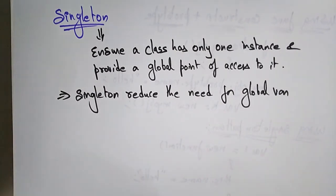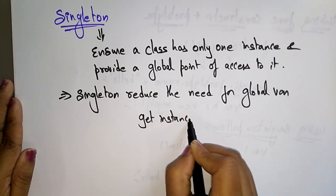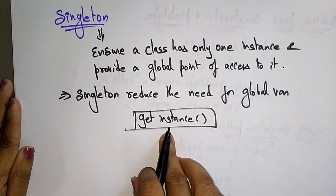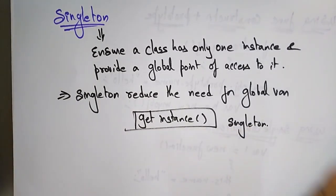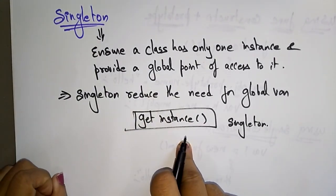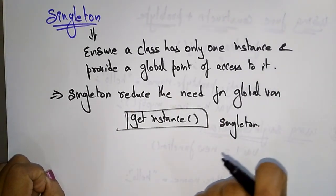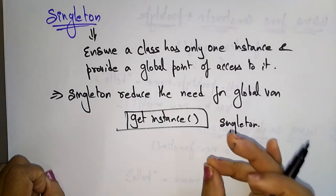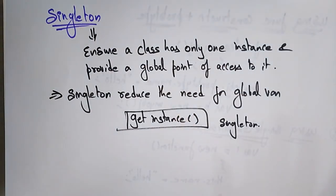The getInstance method is a key part of the Singleton pattern because it ensures a class has only one instance. getInstance returns a unique instance, and it is also responsible for creating and managing the instance object — that's why it is considered a Singleton class.